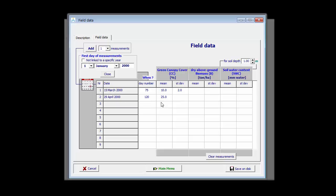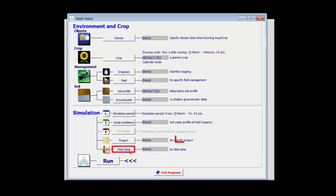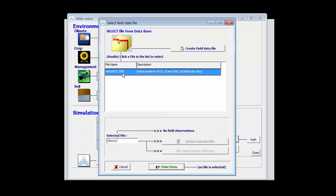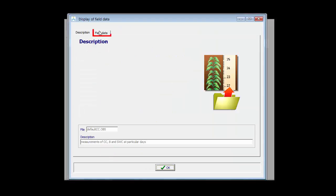So in this list I enter for days on which data was observed the green canopy cover. So when all the data is entered, I can save that on disk and use the data saved for the assessment of the simulation. For the sake of the exercise, let me just take an existing file which has already data.